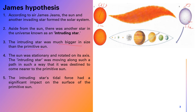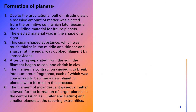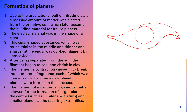As both stars came closer to each other, the gravitational force started to act and some material from the sun came out in the shape of a cigar. This cigar-shaped substance was thicker in the middle and thinner at the edges. Scientists named this structure a filament.